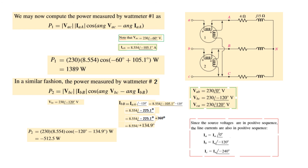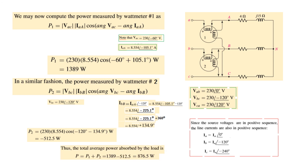This is how you solve two watt meter problems. The total power absorbed is the sum of the two watt meter readings: P1 plus P2.